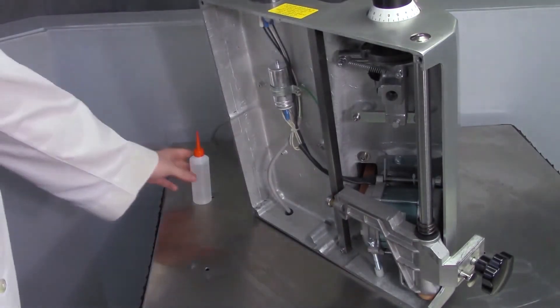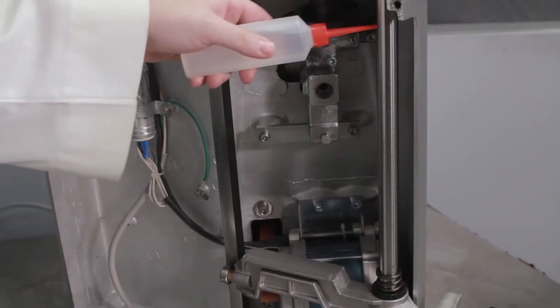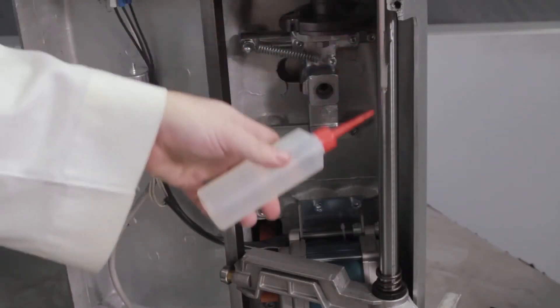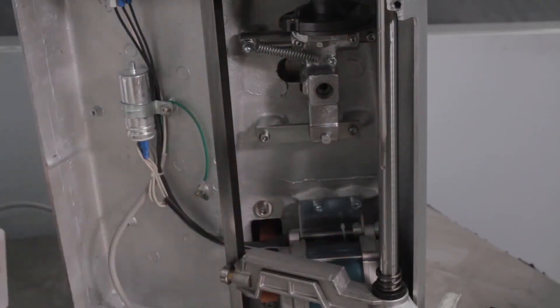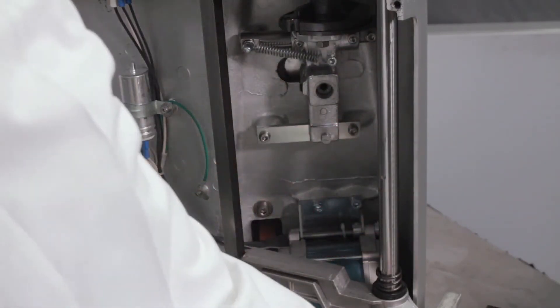Apply a few drops of mineral oil to the carriage slide bar. Carefully move the carriage back and forth to distribute the oil.